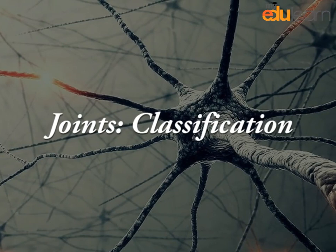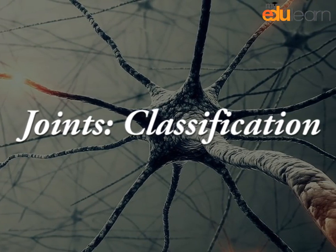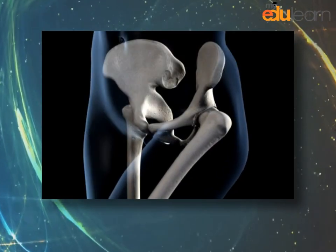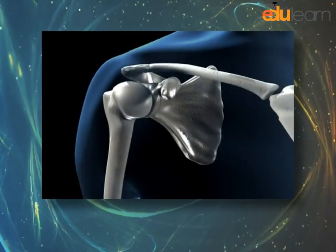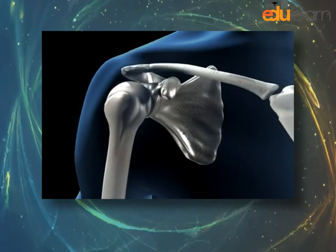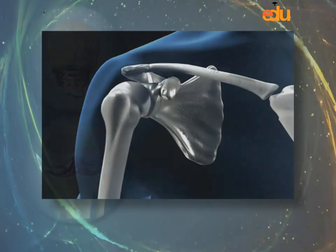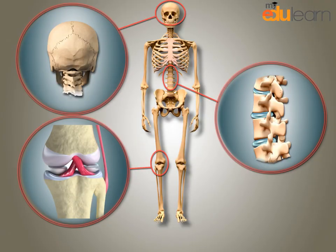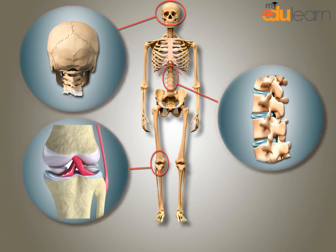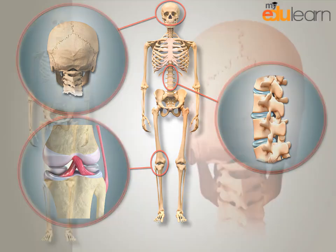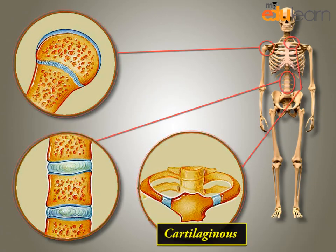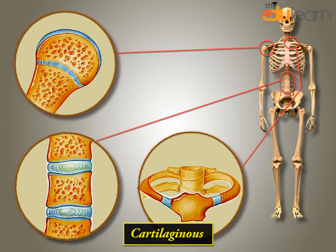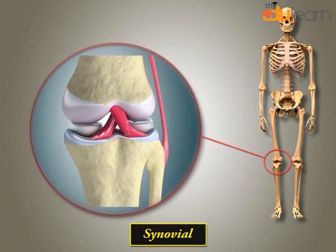Joints classification. You should know that all joints don't act alike — they are different in many aspects. Joints have now been classified into three major structural forms: namely fibrous, cartilaginous, and synovial.